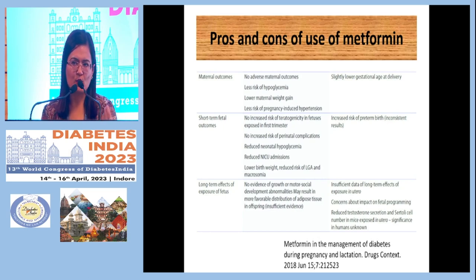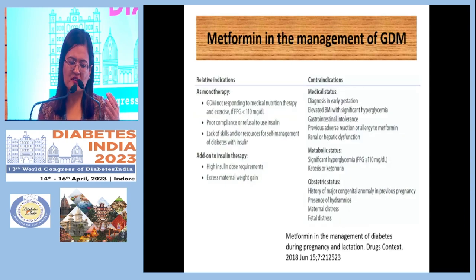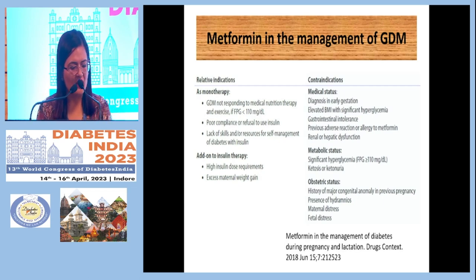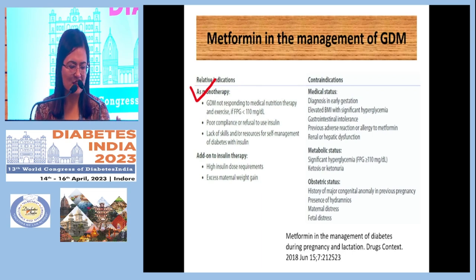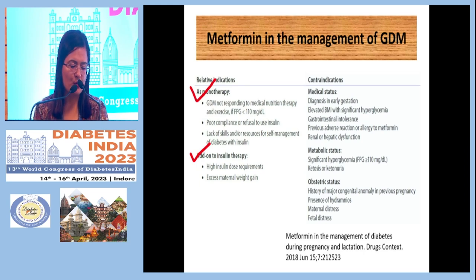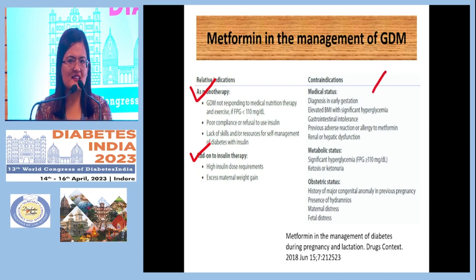Metformin is an oral insulin sensitizer with a low risk of hypoglycemia. However, it has some risks: it may lower gestational age and cause preterm birth in some studies. Metformin can be considered if gestational age is more than 20 weeks, GDM is not controlled with medical nutrition therapy, fasting glucose is less than 110, or the patient refuses insulin or has very high insulin requirements.